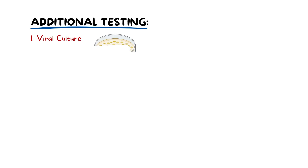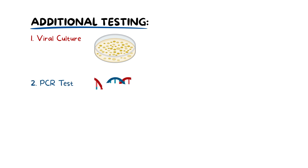Additional testing includes viral culture, which takes a swab of a sore and cultures it to identify the virus. PCR testing is molecular testing that detects viral genetic material for accurate results. Blood tests can also detect antibodies against HSV, aiding in past infection identification. Combining examination, history, and testing ensures an accurate diagnosis, guiding effective treatment and management decisions.